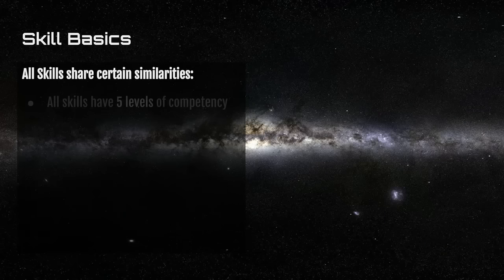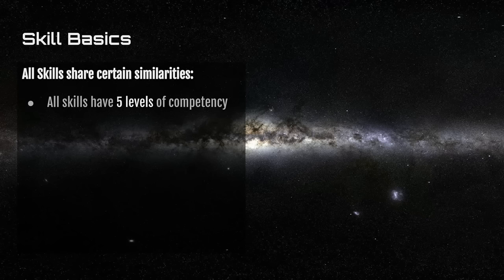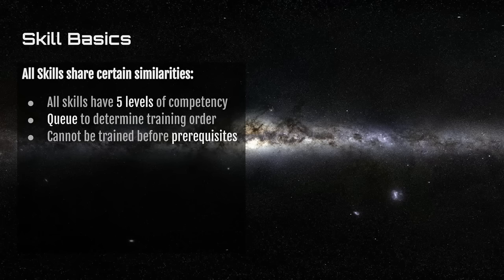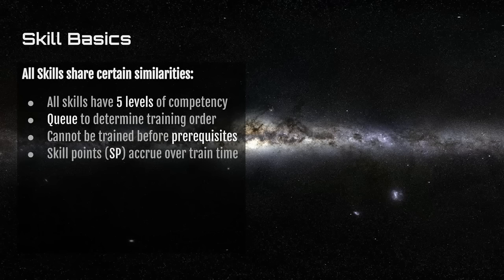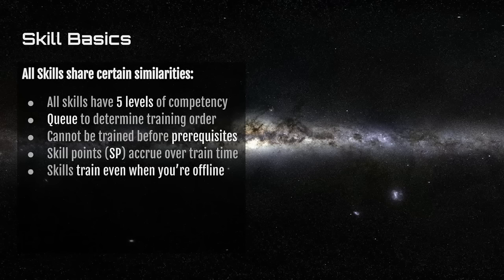All skills share certain similarities. Any individual skill only has five levels of competency. Skills queue in order to determine training order, and skills cannot be trained before their prerequisites — including levels within the same skill. You can't train level three of Evasive Maneuvering until you've trained level two. Skill points are a measure of how long you've been training a given skill and accrue over training time. Skills train even when you're offline, so you can set your skill queue, log off, and when you log in the next day those skills will have trained.